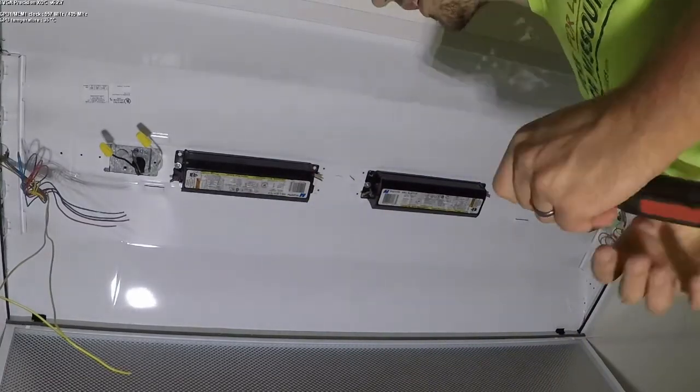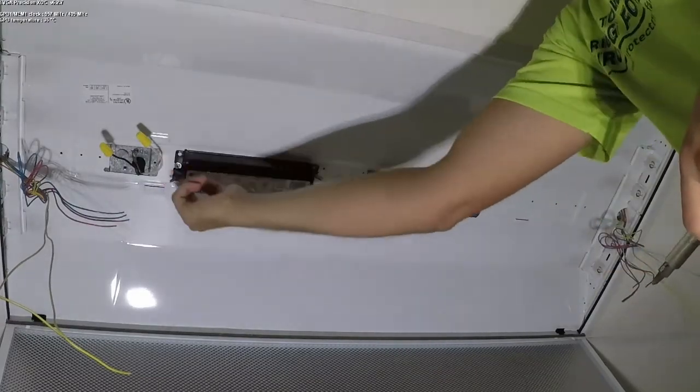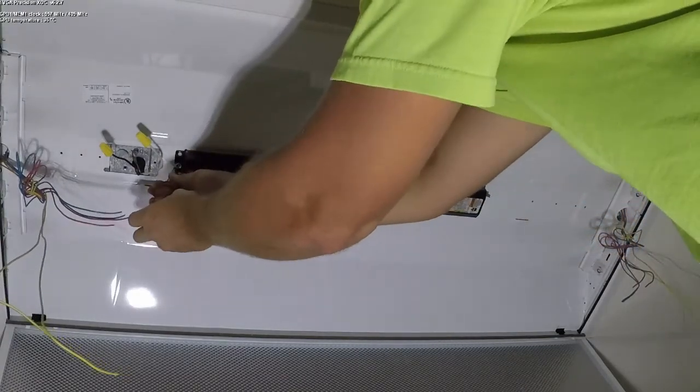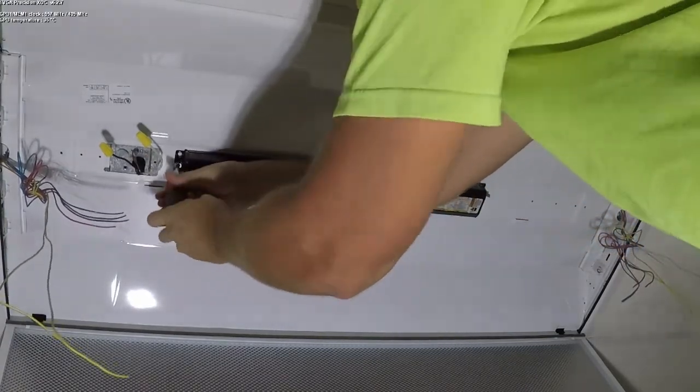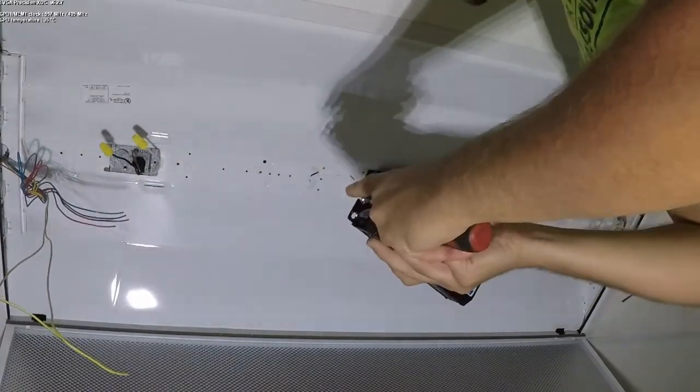Alright, once you have your wires cut off you can take these screws. Each of these ballasts is held on by a single screw on one side and then it just pushes into a slot on the other. So you can pull your screw out, pull your ballast out.